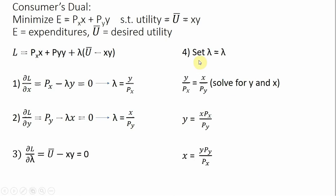Now for the consumer's dual problem. Here we minimize expenditures subject to a targeted level of utility. Setting up the Lagrangian: the objective is the price of good X times X plus the price of good Y times Y, plus lambda times the constraint. We take three partial derivatives, set all equal to zero, and solve for lambda in each of the first two steps, then set lambda equal to lambda and solve for Y and X.